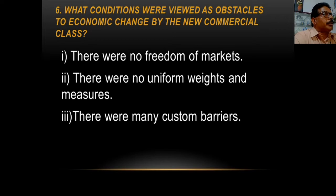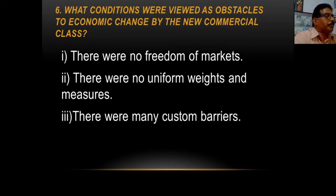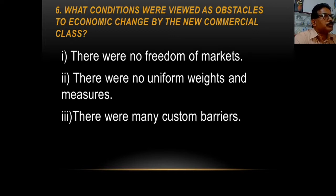There were many custom barriers. A person travelling from one place to another — for example from Nuremberg to Luxembourg — had to pay custom duties at 11 places, paying 5% custom tax at each place. So there were many custom barriers and they had to pay customs duty and tax at each one.